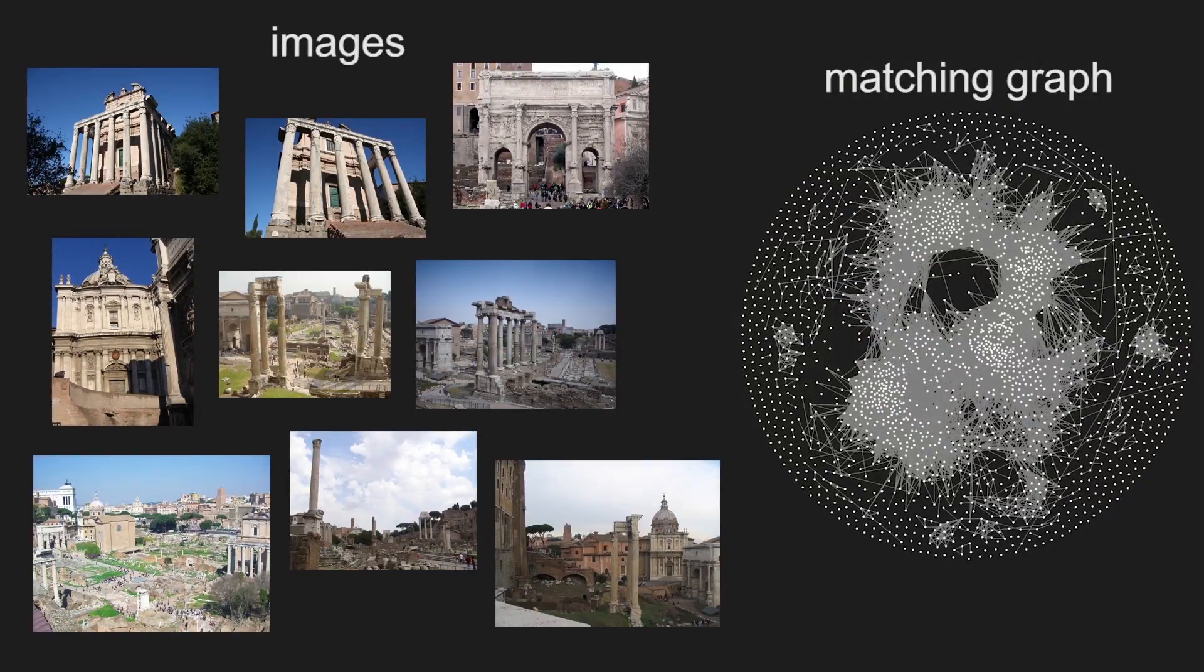This correspondence information is encoded in a matching graph, where every image is represented as a vertex. Edges correspond to pairs of images that have been matched, or geometrically verified, in this way.